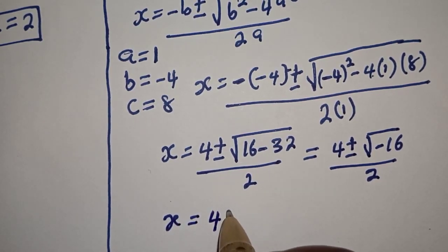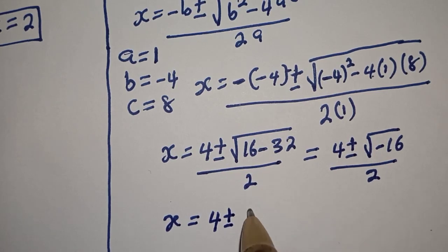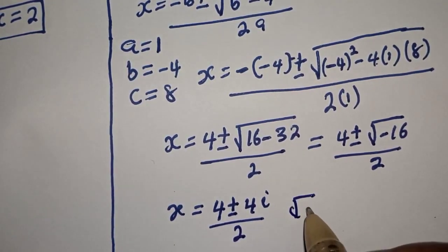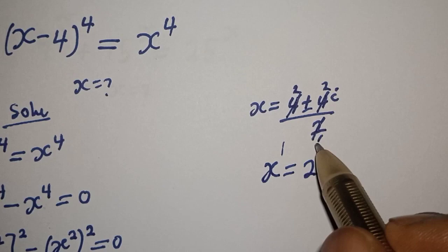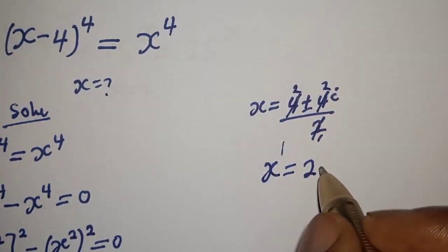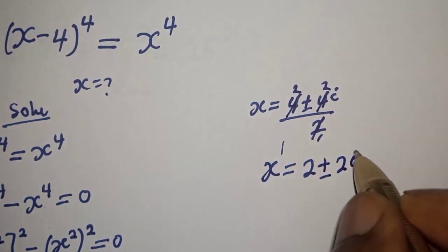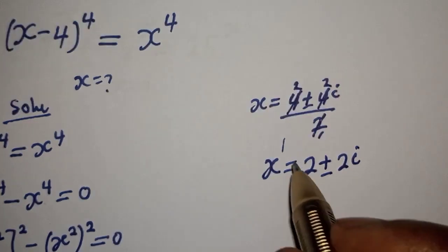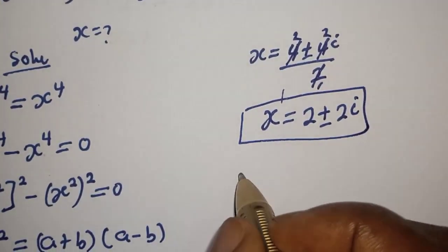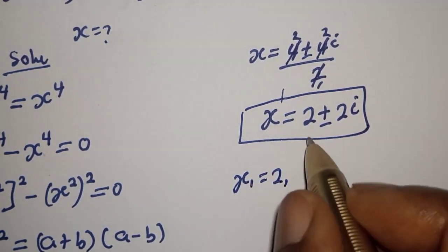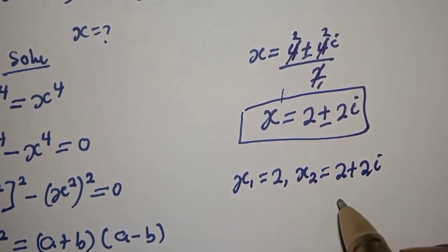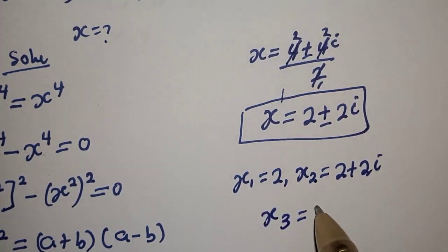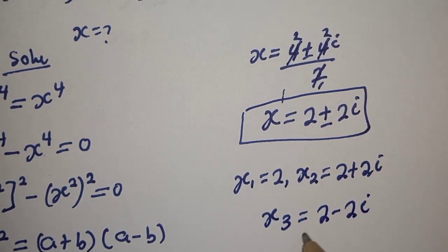Since the square root of minus 1 equals i, we have s equals 4 plus or minus 4i, over 2, which simplifies to s equals 2 plus or minus 2i. Therefore, our final answers are: s1 equals 2, s2 equals 2 plus 2i, and s3 equals 2 minus 2i.